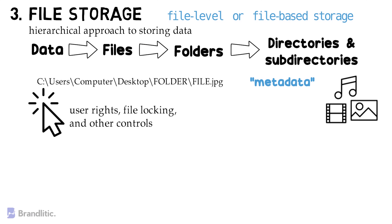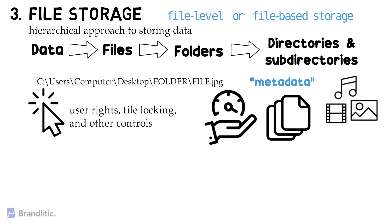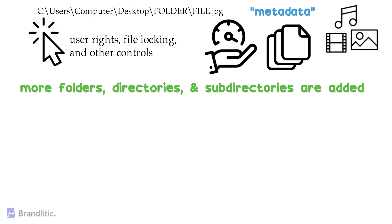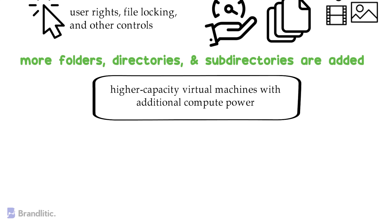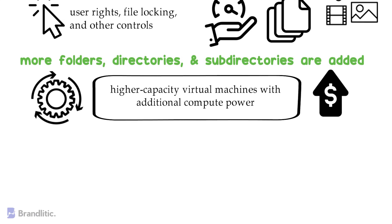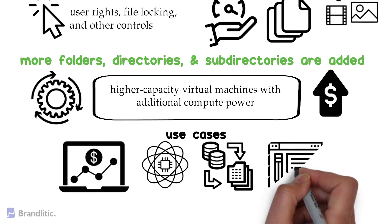From a technical standpoint, hierarchical file storage performs well to a point. But once your file storage gets to a certain size, you will begin to experience performance issues with a slowdown in file retrieval. This is caused by the constraints of only having a single pathway to each file, which only increases as more folders, directories, and subdirectories are added to the system. The nature of cloud systems will allow you to mitigate these performance issues to a certain extent. Scaling with file storage systems includes adding higher capacity virtual machines with additional compute power, though you may find it less efficient and more expensive than opting for an object or block storage approach. Some of the major use cases for file storage include building financial modeling systems, machine learning, application migrations, and running web content management infrastructure.